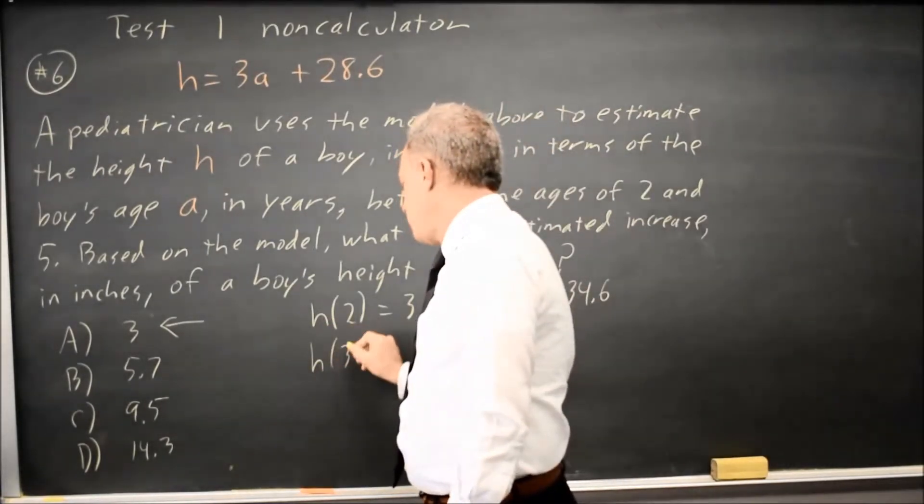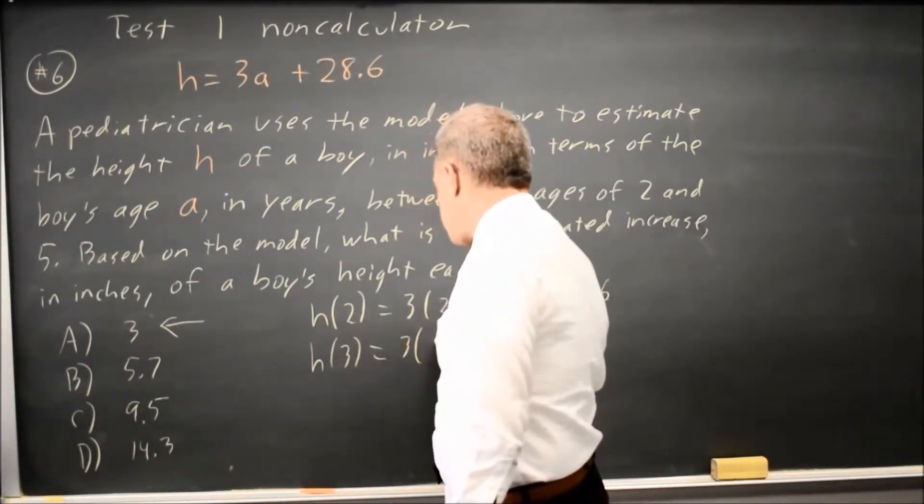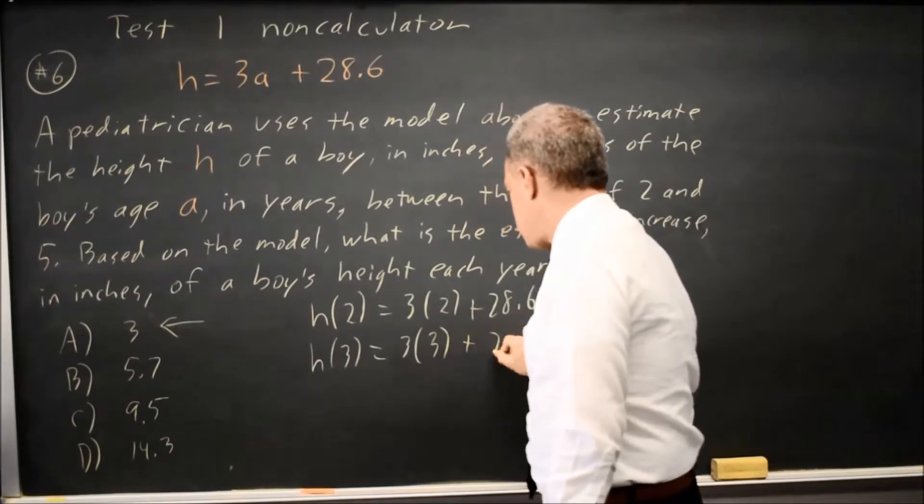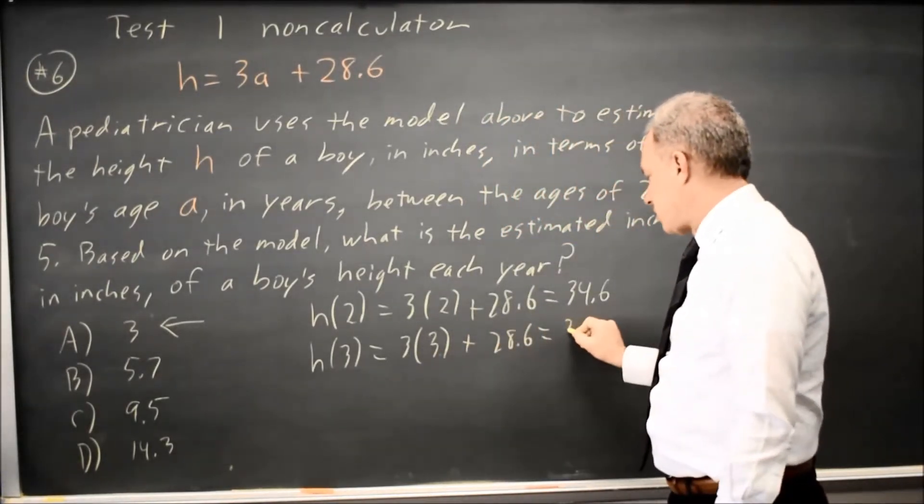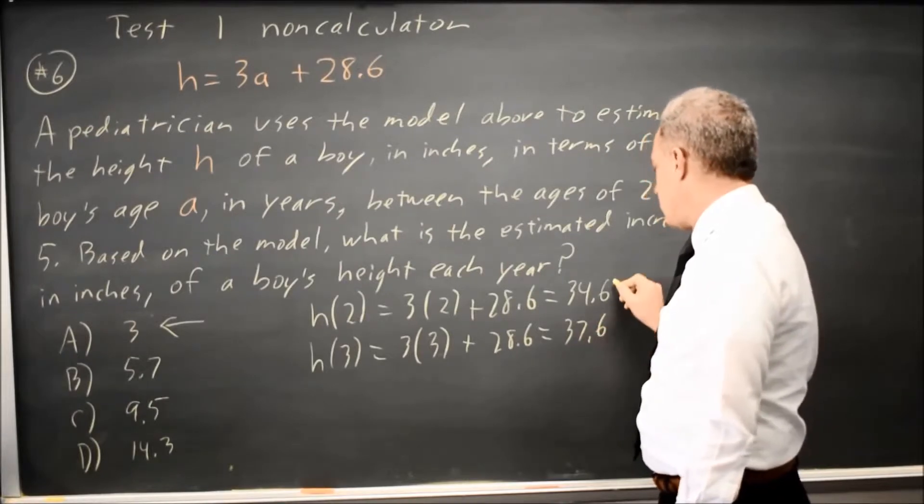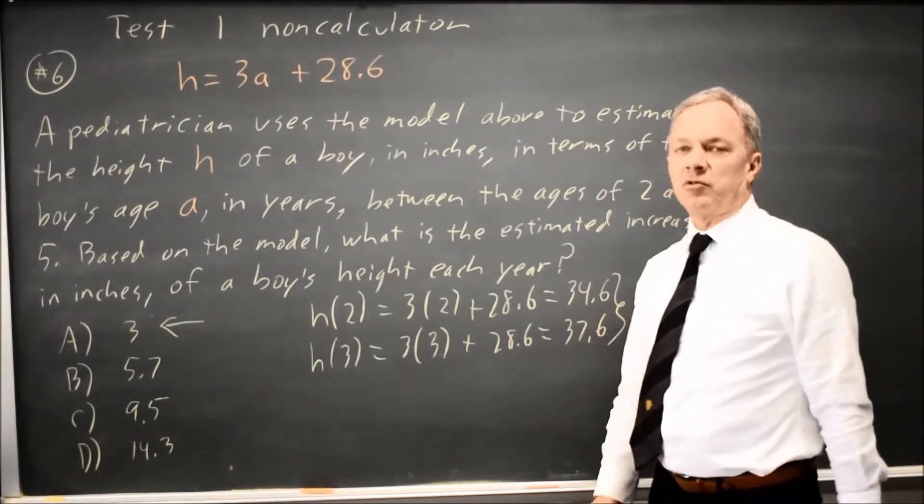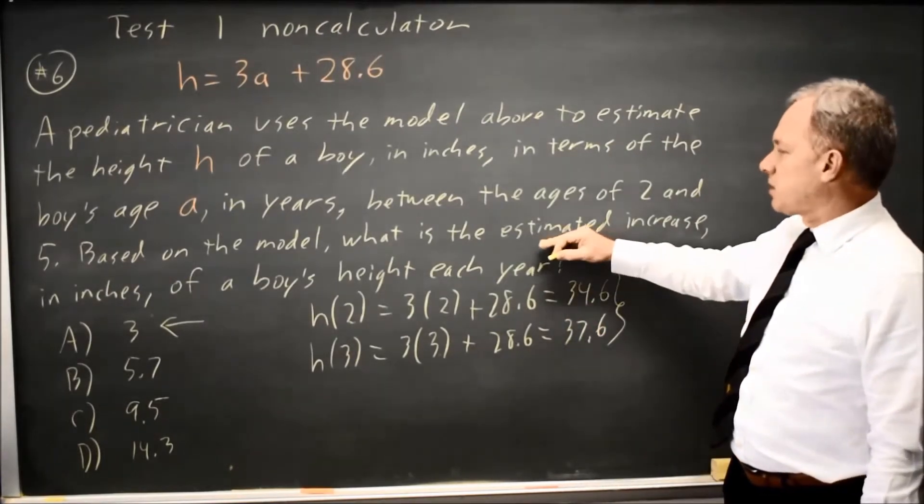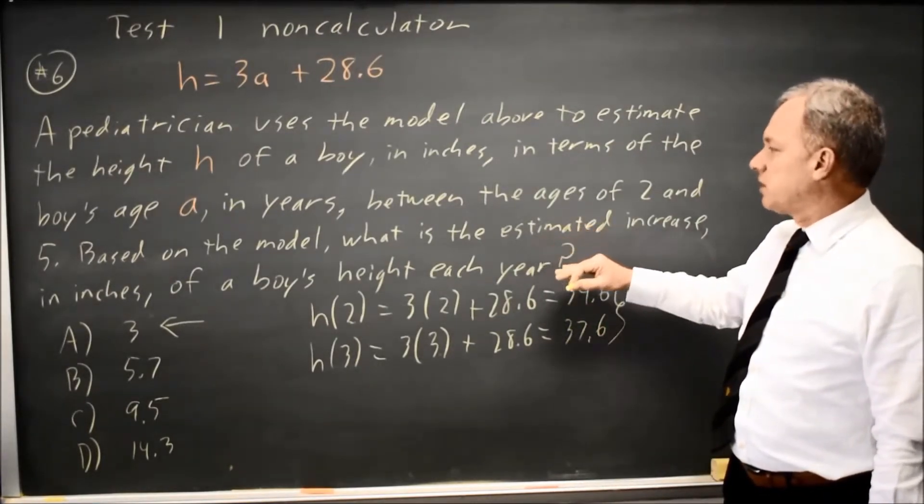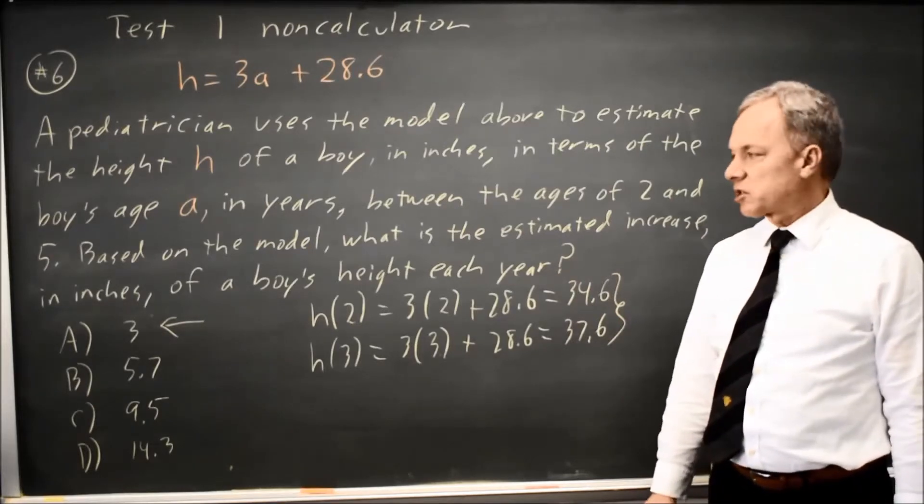And the height at age 3 equals 3 times your age 3 plus 28.6 is 9 plus 28.6 is 37.6. In that span of one year, the boy's height went up by 3 inches. So the estimated increase in the boy's height each year is 3.